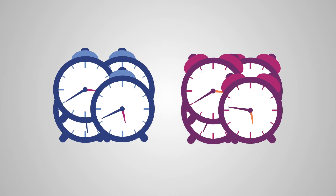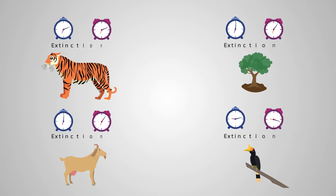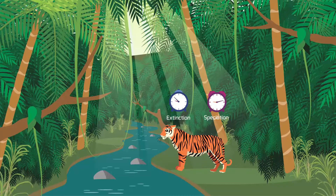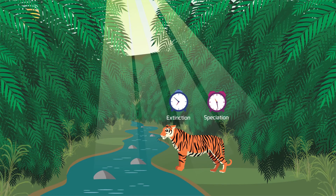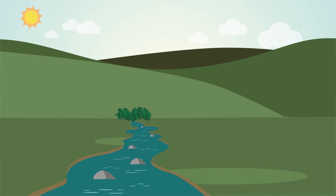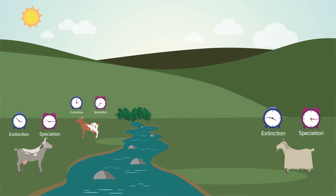Throughout time, each existing species has two clocks — one describing its tendency towards extinction, the other its tendency to speciate. Many factors influence these clocks. For example, global warming might accelerate a species' extinction clock, so they become extinct. This may create evolutionary space for another species, whose speciation clock accelerates.